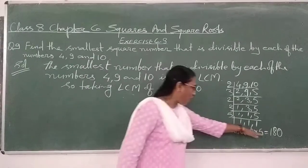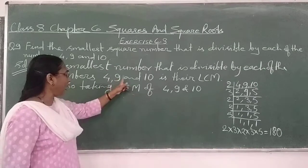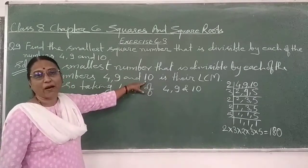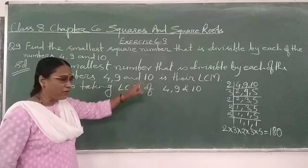We have to go to the smallest number which is 4, 9, and 10 completely divisible. Go. Now.